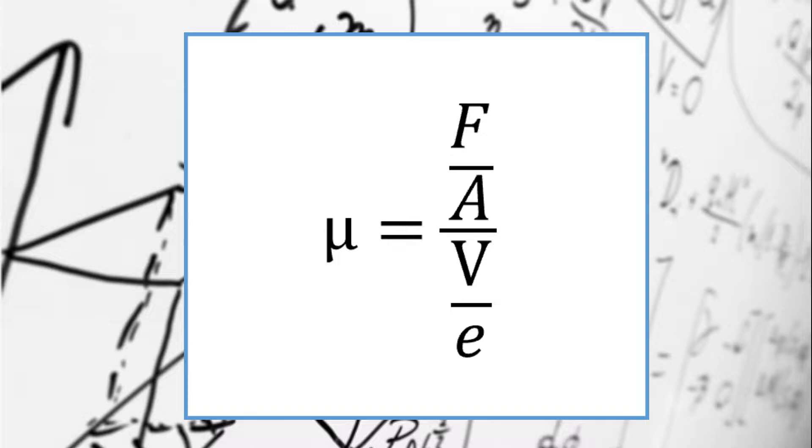This resistance is expressed as the quotient between the shear stress per unit area and the shear velocity per unit thickness of the fluid layer. Newtonian fluids are characterized by the linear relationship between unit shear stress and unit shear velocity — that is, the graphical representation of F over A relative to V over E is a straight line.